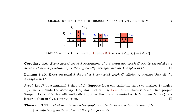A corollary to Lemma 3.8 states that every nested set of three-separations of a three-connected graph G can be extended to a nested set of three-separations that efficiently distinguishes all four-tangles in G. Lemma 3.10 asserts that every maximal three-chop of a three-connected graph G efficiently distinguishes all the four-tangles in G. The proof involves a contradiction argument, where a maximal three-chop N is assumed not to efficiently distinguish two distinct four-tangles tau1 and tau2. By Lemma 3.8, a claw-free proper three-separation S of G is found that efficiently distinguishes the tau_i and is nested with N, leading to a contradiction.